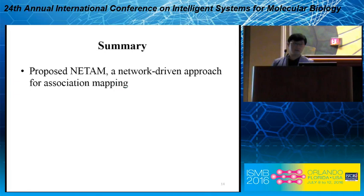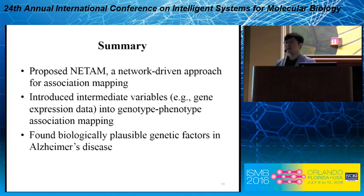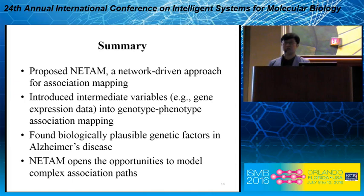To summarize, we propose NITAM, a network-driven approach for genome-wide association mapping. In this framework, we introduced intermediate variables into genotype-phenotype association mapping. We confirmed that intermediate variables dramatically boost the performance of association mapping, and we found biologically plausible genetic factors in Alzheimer's disease. Finally, NITAM opens the opportunity to model complex mechanisms between SNPs and phenotypes, and I believe that more work remains to be done in this direction of research.